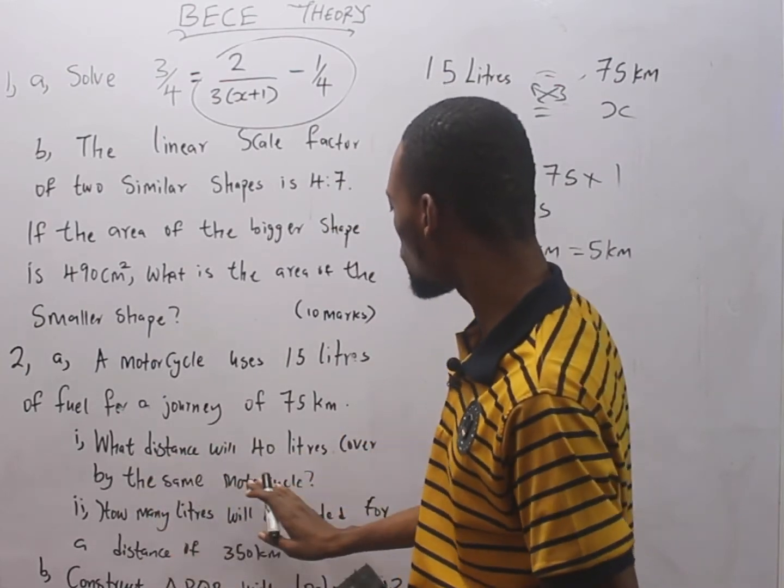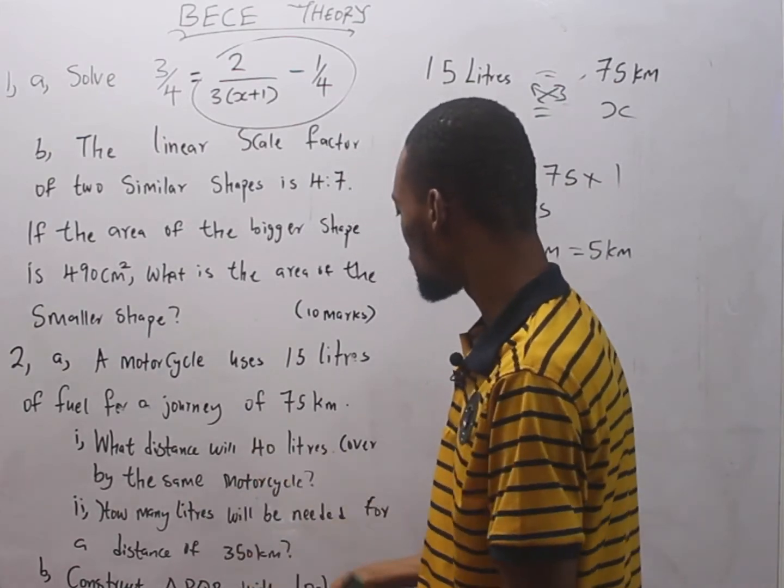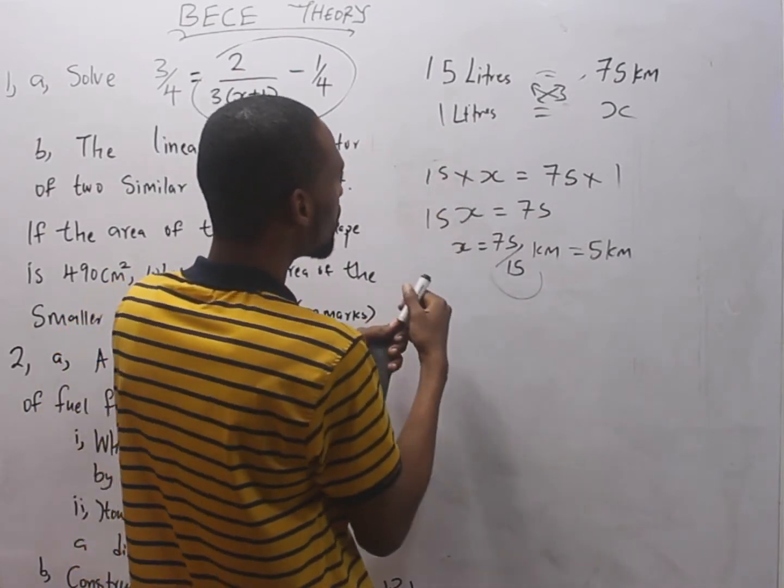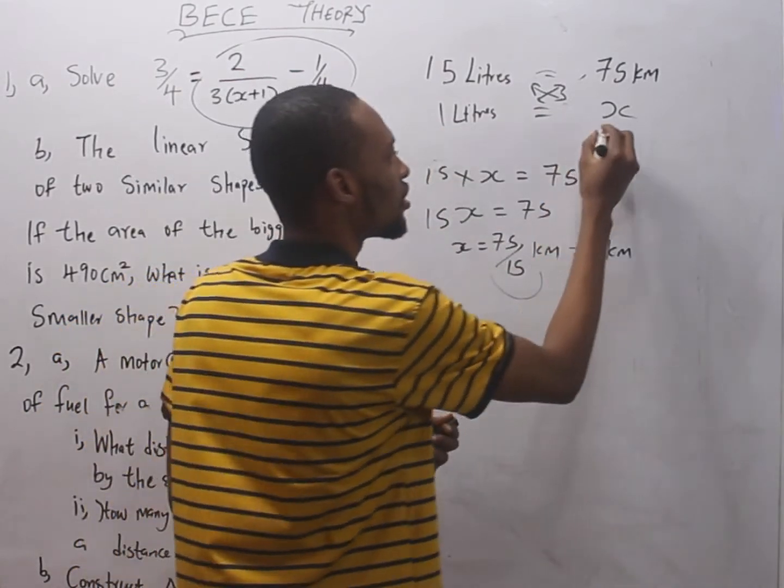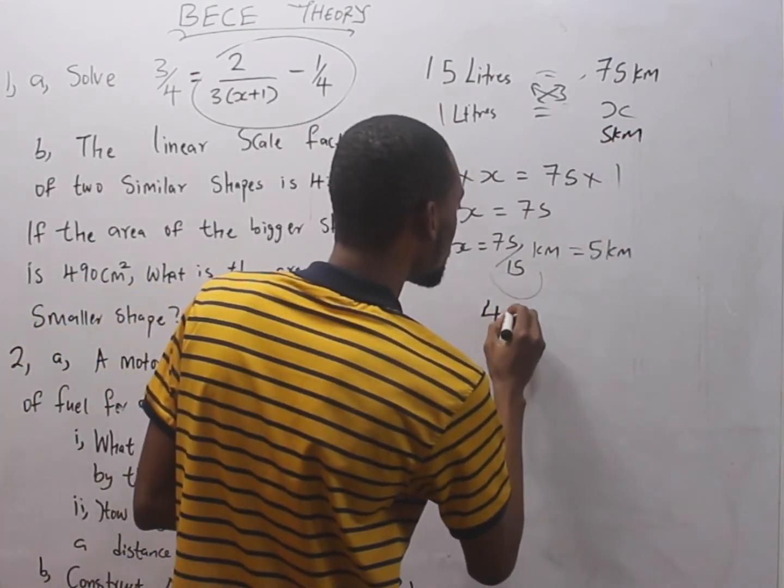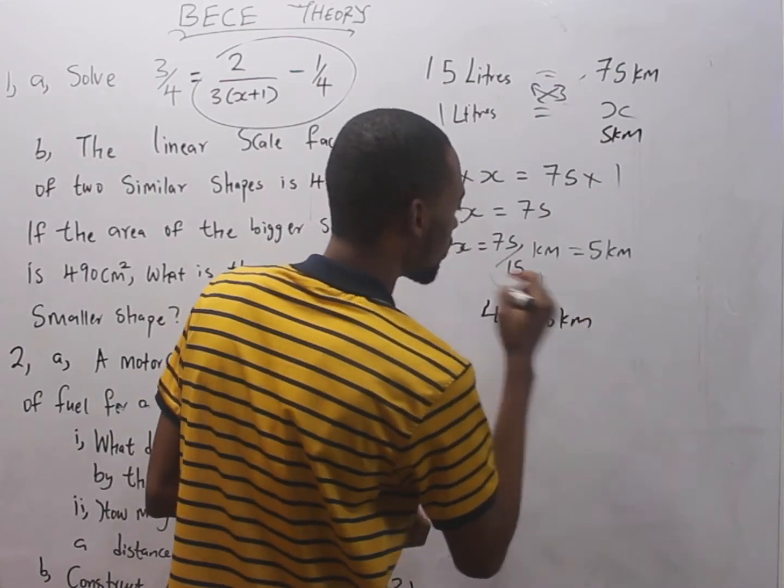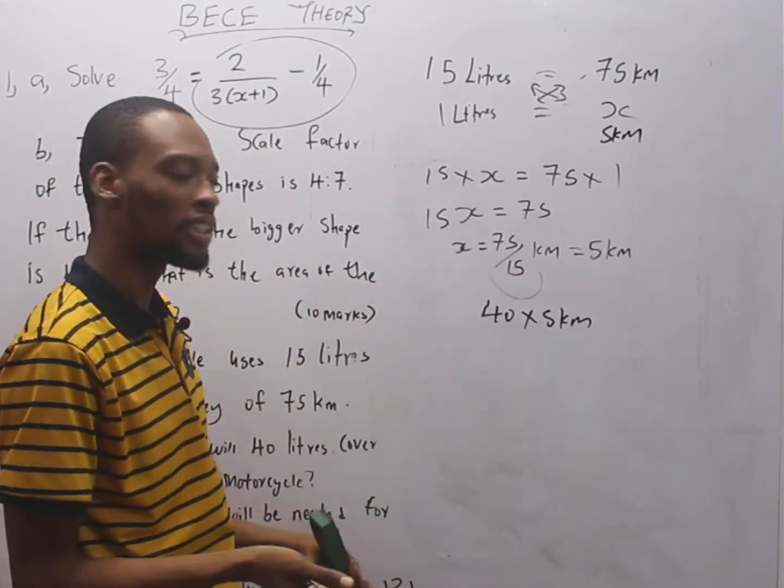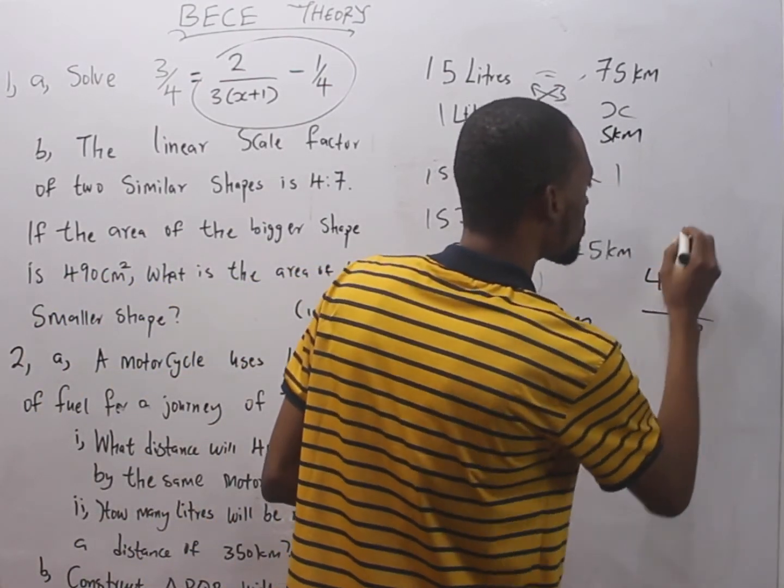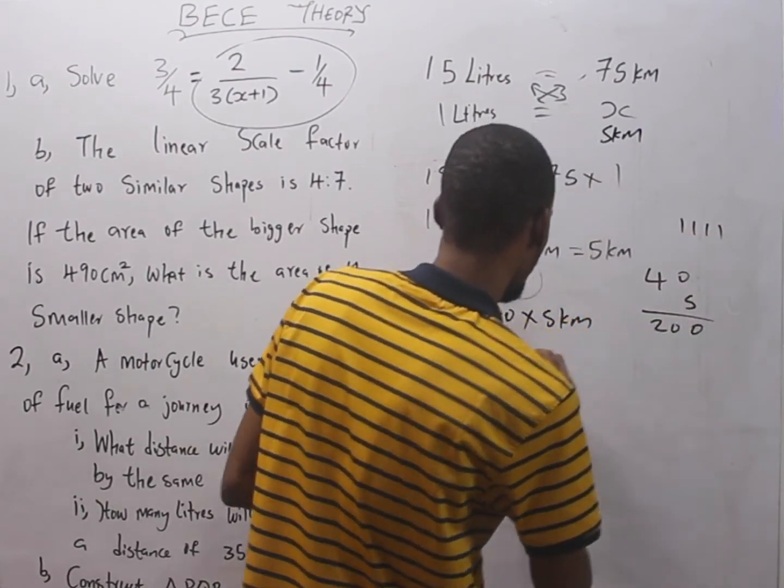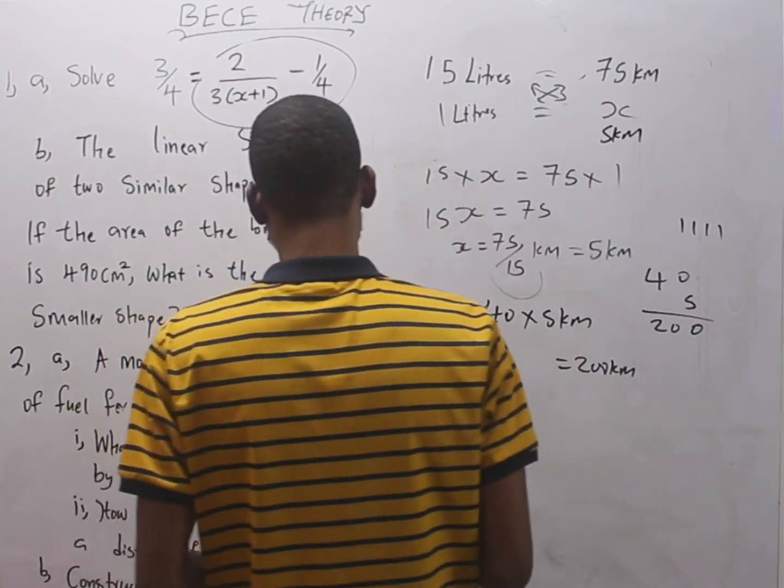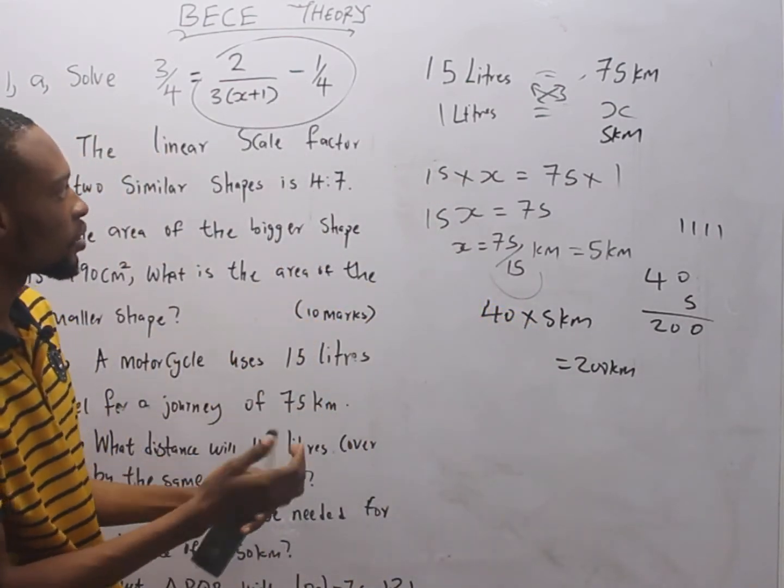The first one says, what distance will 40 liters cover by the same motorcycle? If 1 liter covers 5 kilometers, 40 liters will simply cover 40 times 5 kilometers. That equals 200 kilometers. That is what 40 liters will cover.